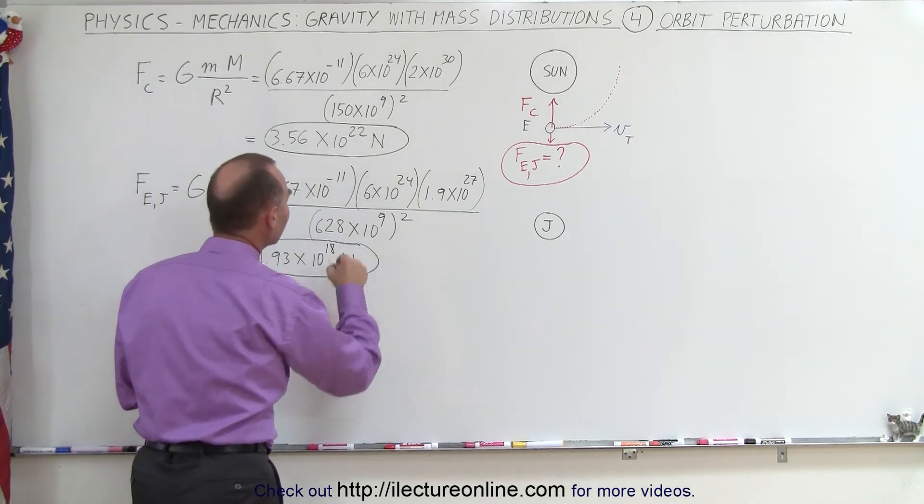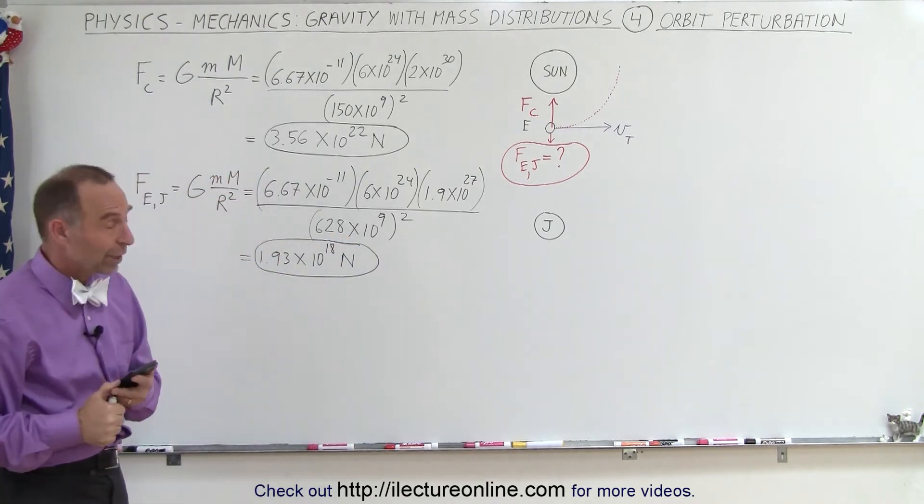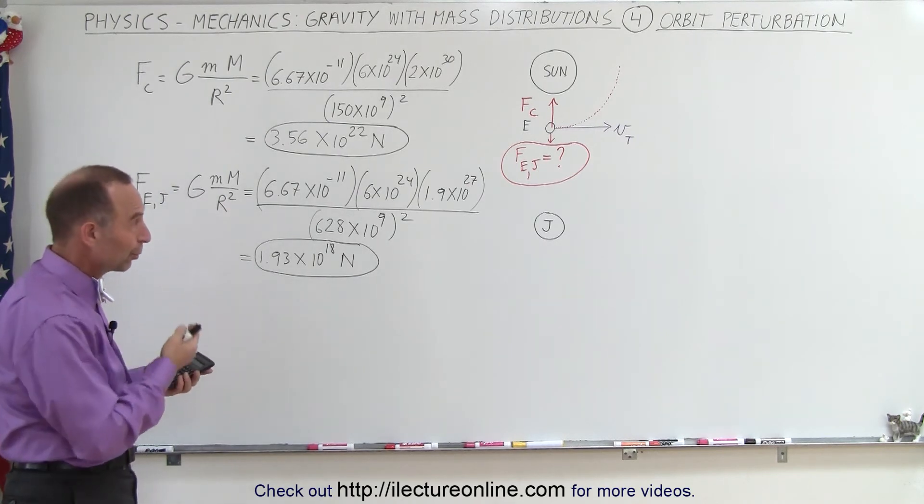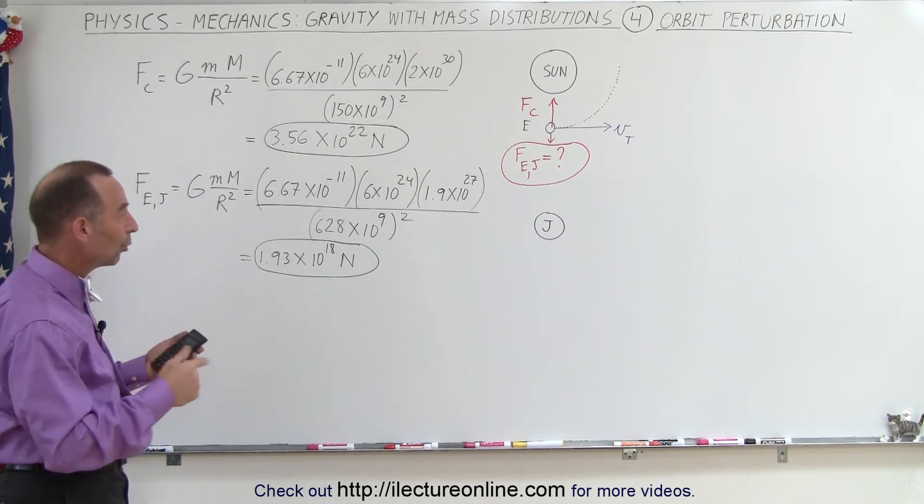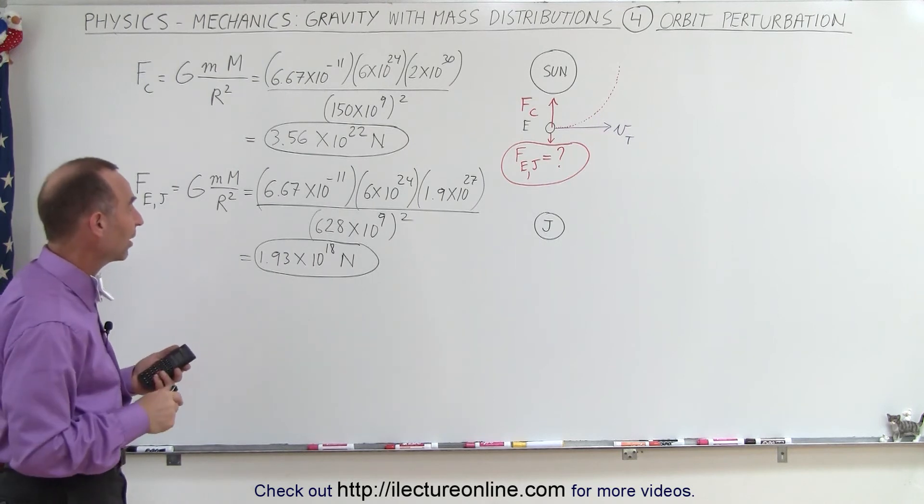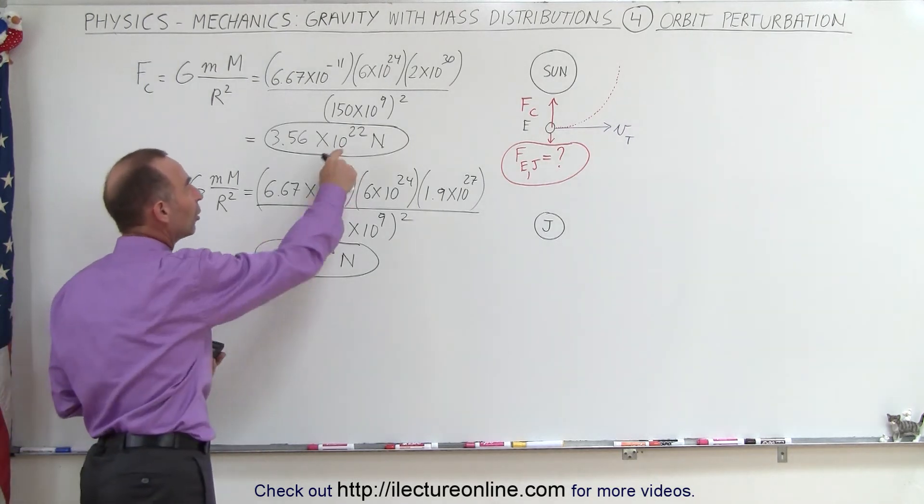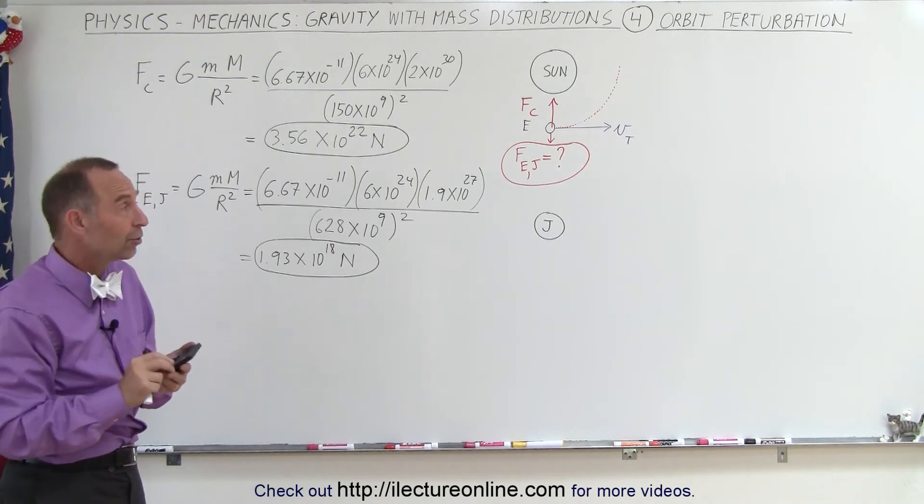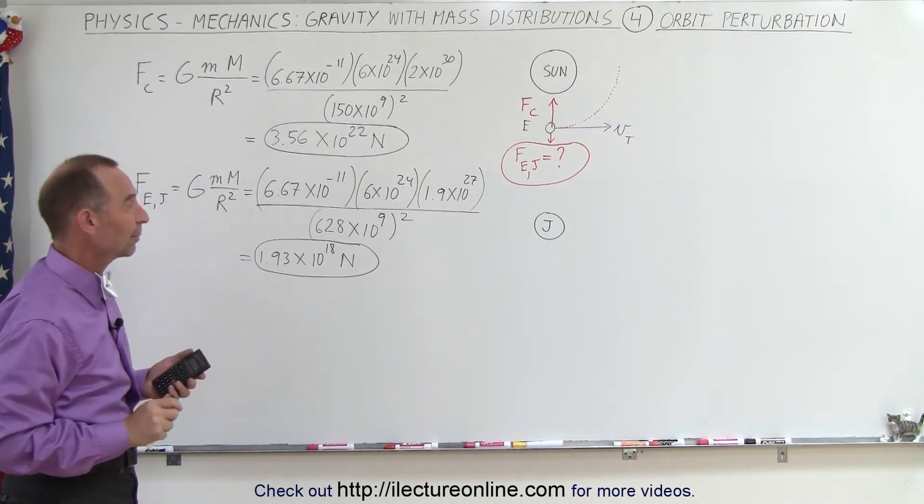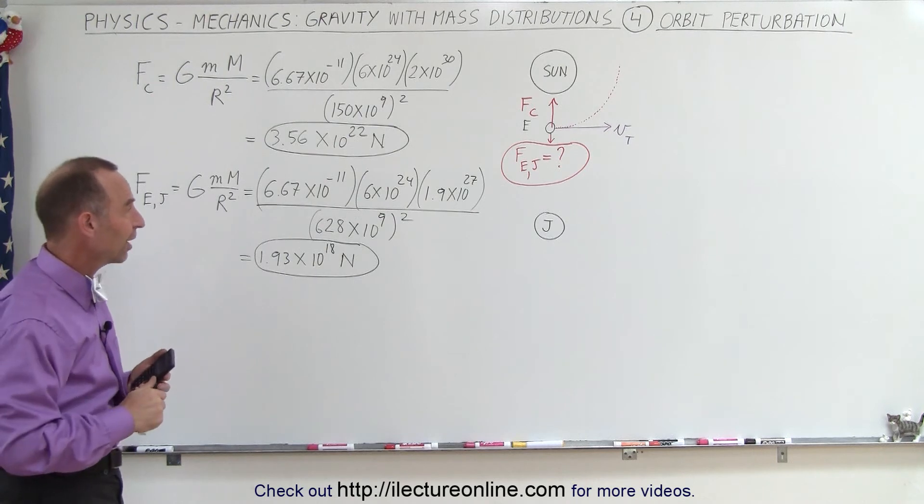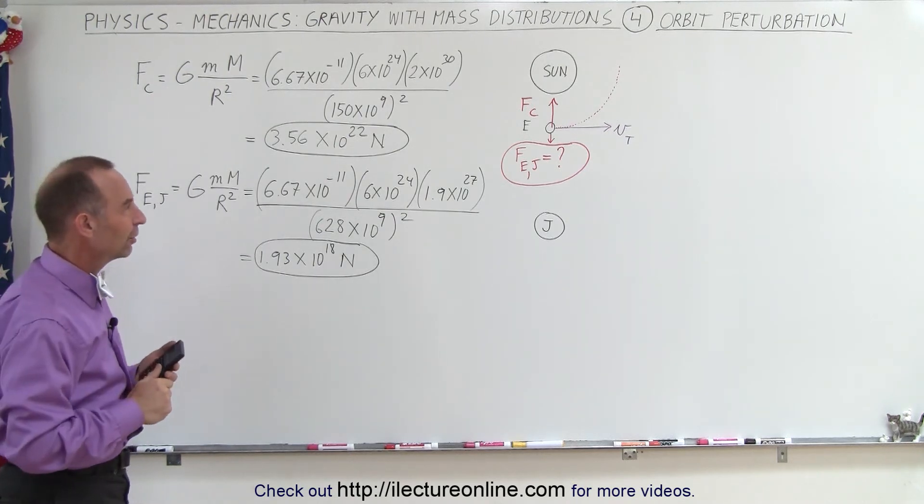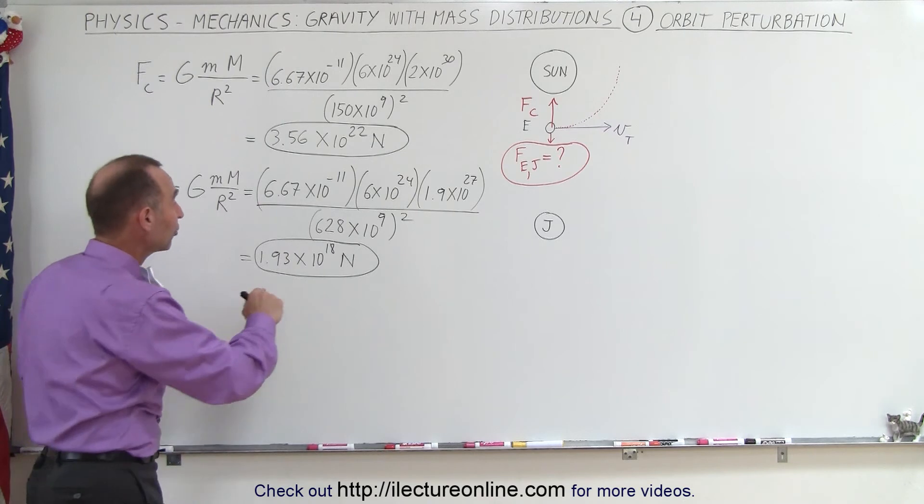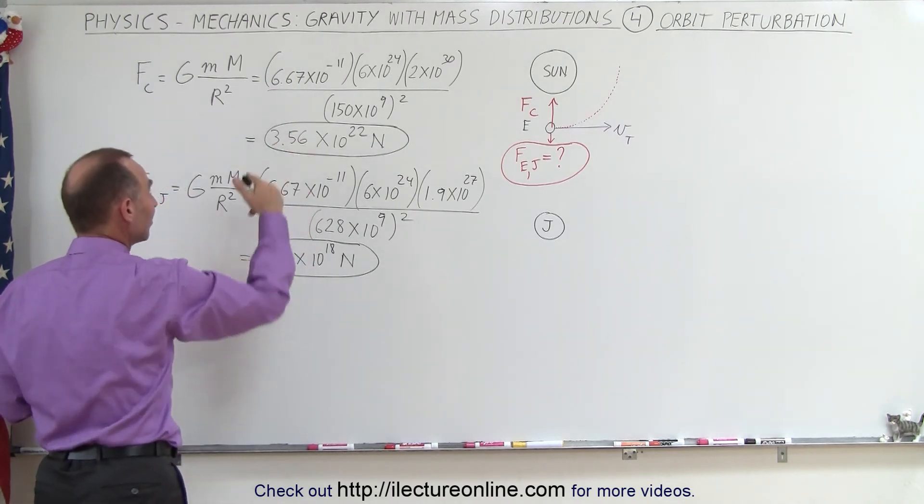So you can see it's significantly less, which of course is a really good thing. If this was a lot more, the Earth's orbit would change a lot and would always be on a different path around the Sun. But since it's relatively small, there's only small perturbations, although even those small perturbations do have a tremendous effect on the climate of the Earth over long periods of time. Most likely the cause of the ice ages.